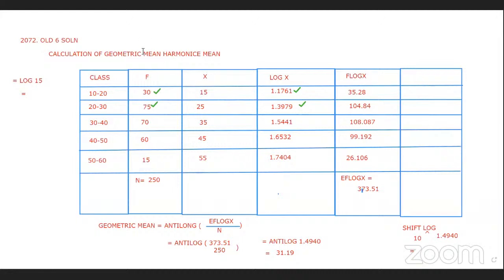You can see how to use the calculator. For antilog, use 10 to the power of something. Is there a scientific calculator? The antilog of 1.4940 — you enter 1.4940 and the calculator will divide and give the result. The value is 1.4940.